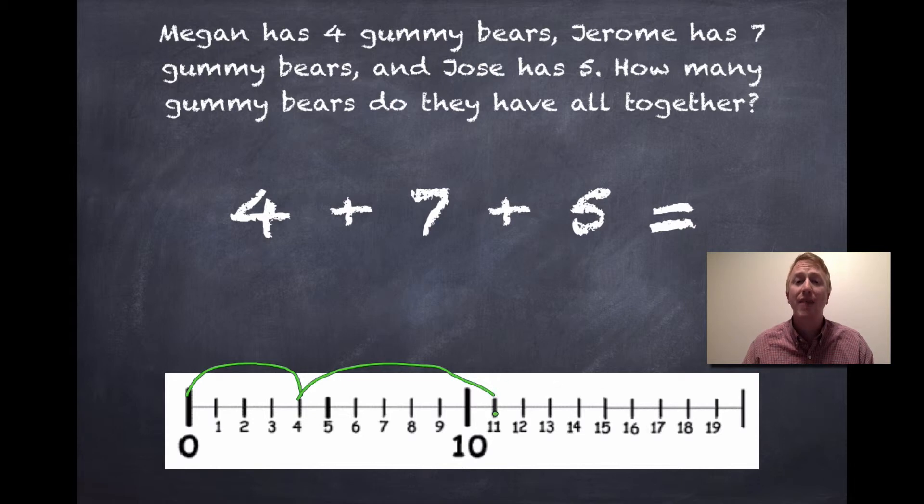Let's add five more. One, two, three, four, five. So, my final jump is all the way over to my sixteen. So, four plus seven plus five equals sixteen. Let's keep moving.